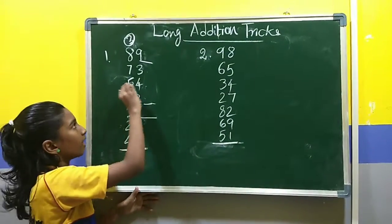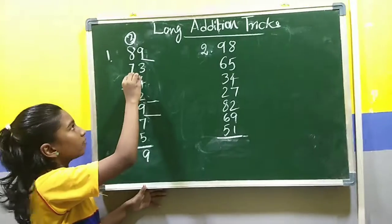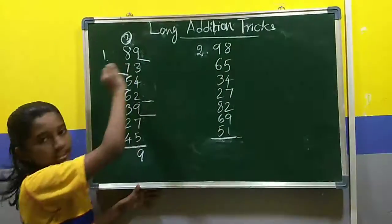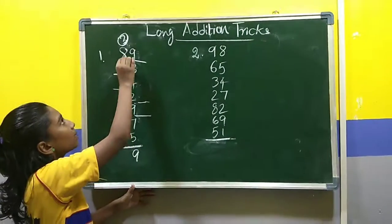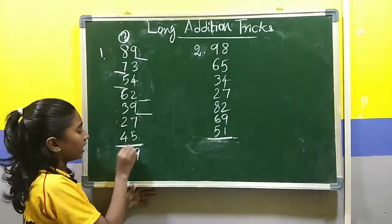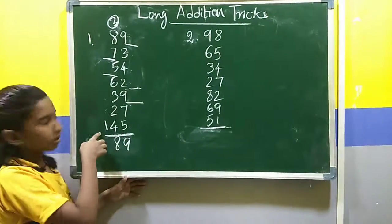9 plus 6, 15. 5, 10 is dropped here. 5 plus 5, 10. Again, 10 is dropped here. 7 plus 8, 15. 15 plus 3, 18. 8, 1 is put here.